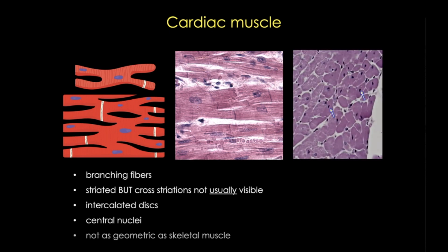In transverse section, you can also see these central nuclei, though you won't see them in every single cell because of the plane of section. Cardiac myocytes look much less regular and geometric in cross section, and you can see larger spaces between the fibers — that again reflects the branching of the cardiac myocytes.